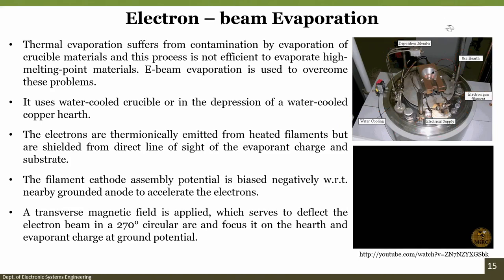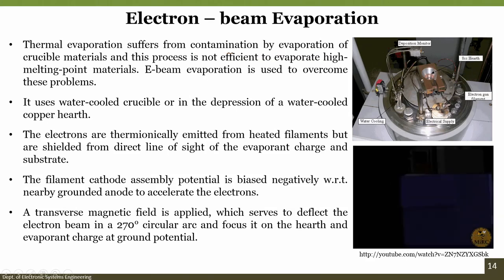Thermal evaporation suffers from contamination by evaporation of crucible materials and cannot evaporate high melting point materials. Electron beam evaporation overcomes these problems using a water-cooled copper hearth. Electrons are thermionically emitted from a heated filament but shielded from direct line of sight of the evaporation charge and substrate. The filament/cathode assembly is biased negatively, repelling electrons toward the anode, which accelerates them further. The magnetic field deflects the beam through a 270-degree arc onto the hearth.